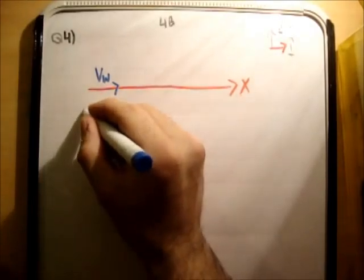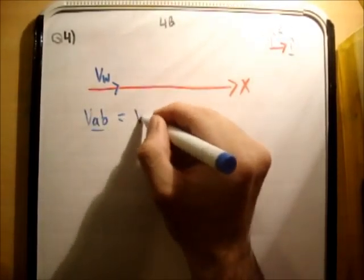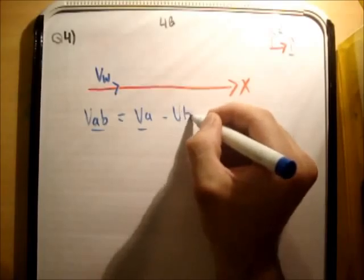The next thing we need to do is analyze, what does VAB mean again? So mathematically it's VA minus VB. That's very simple.